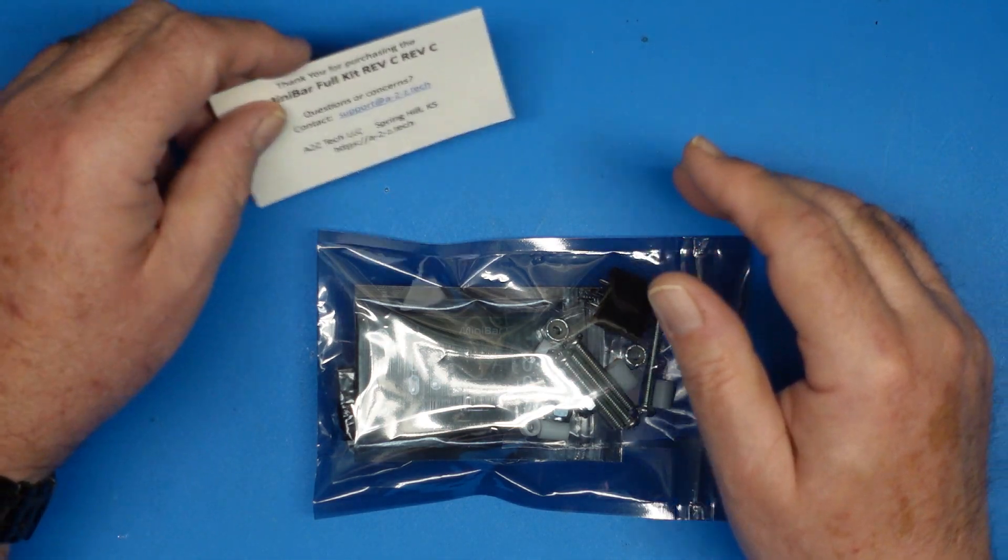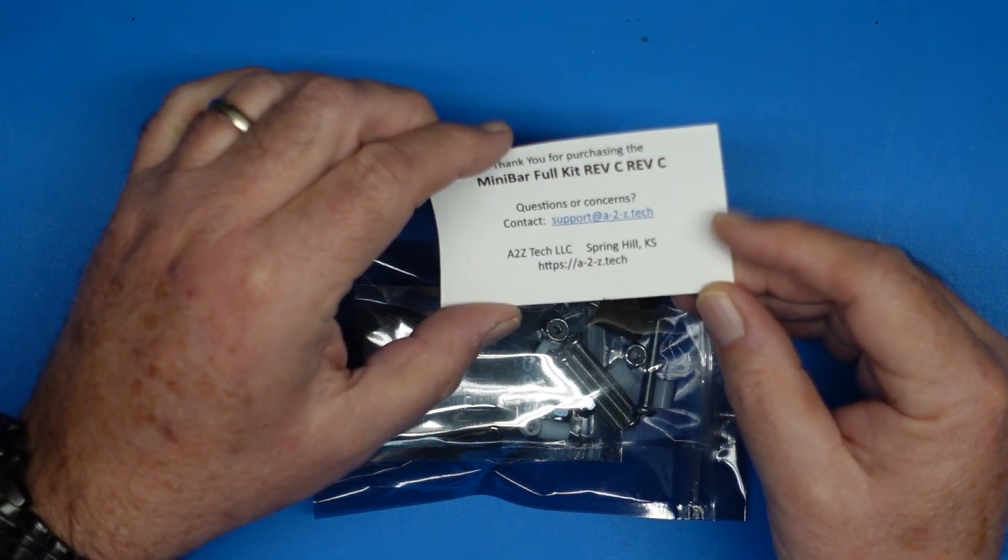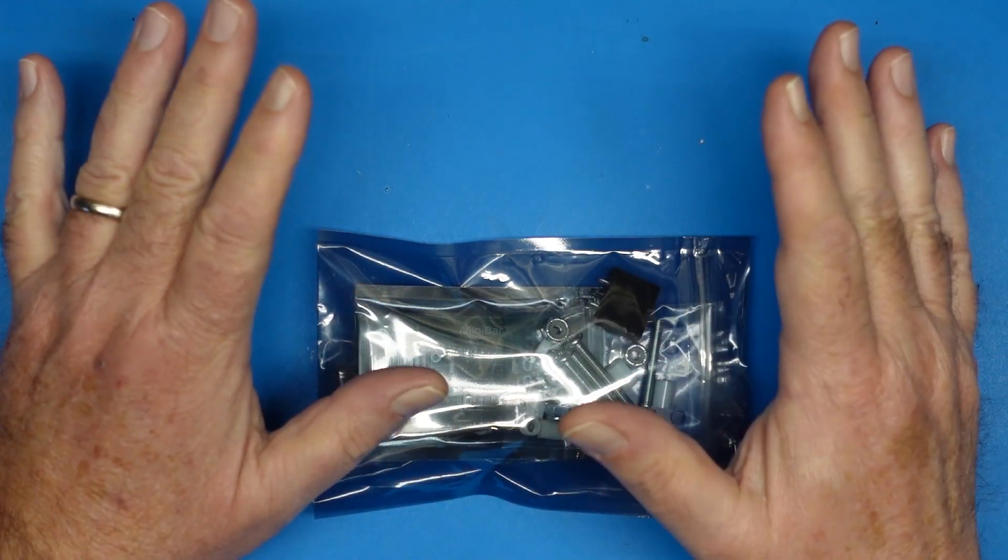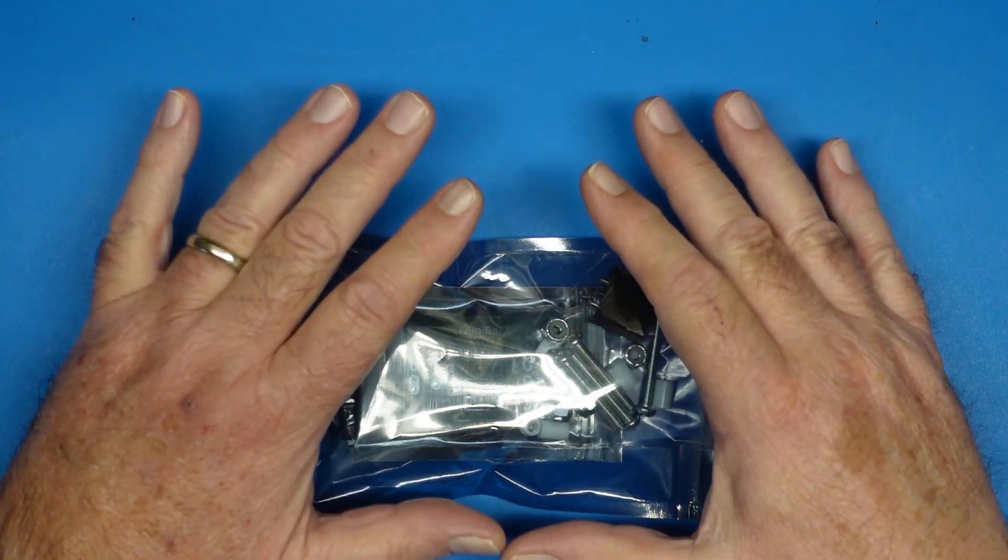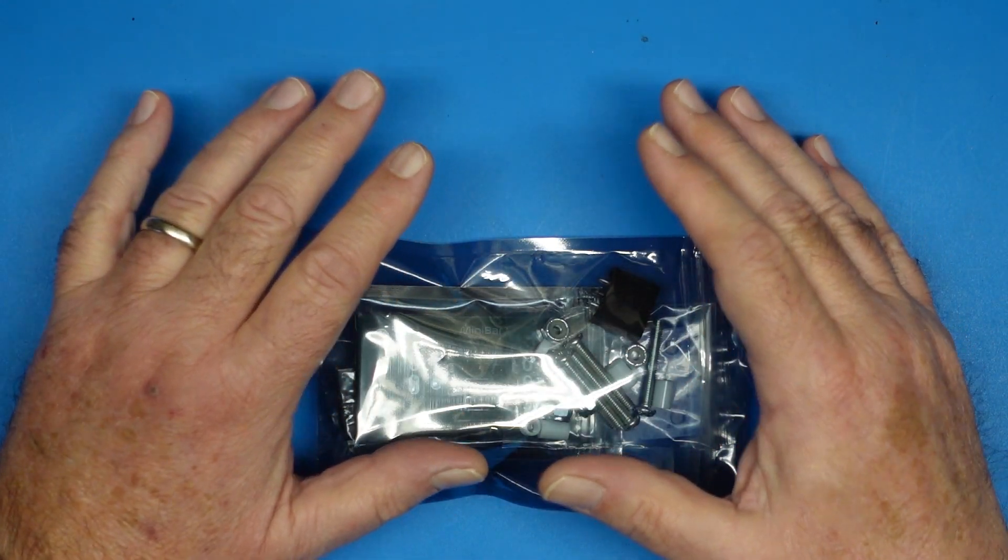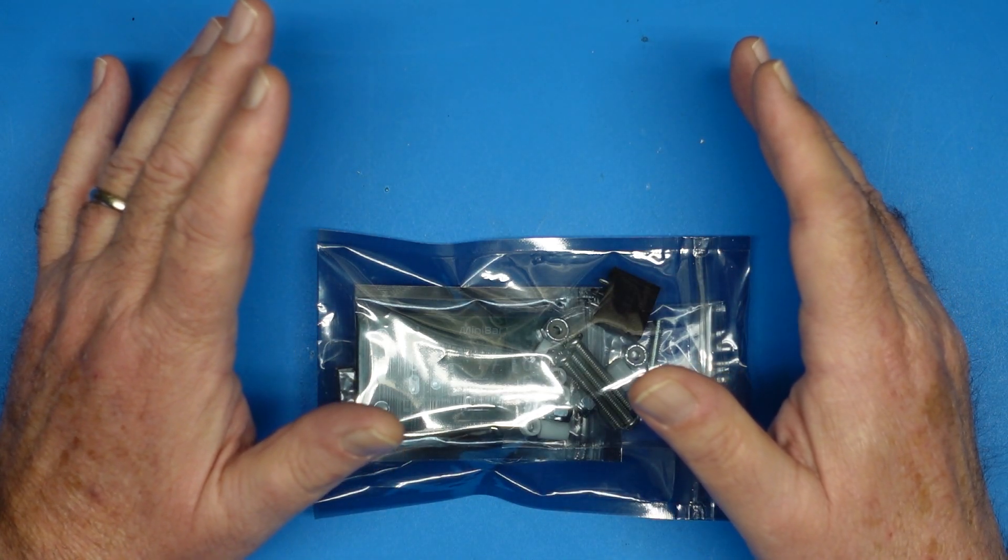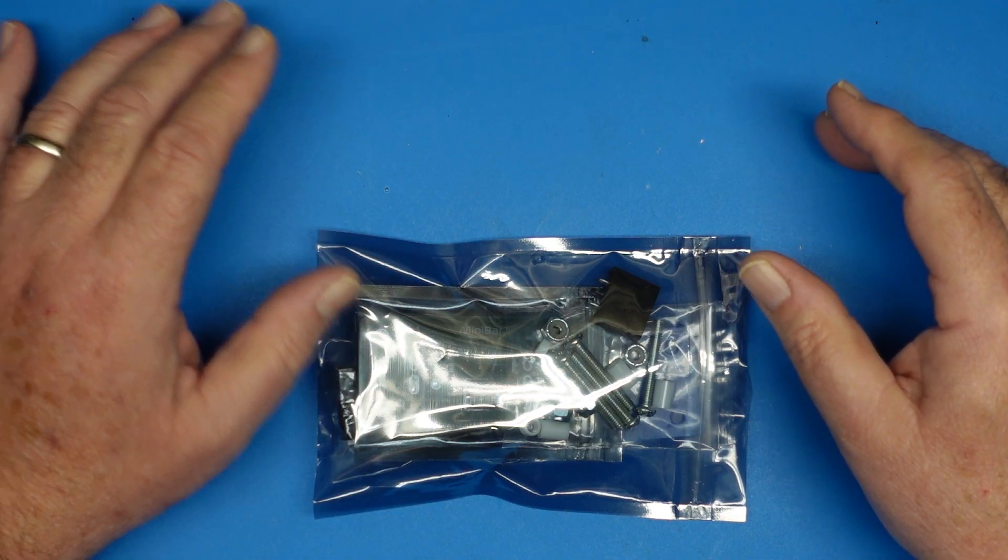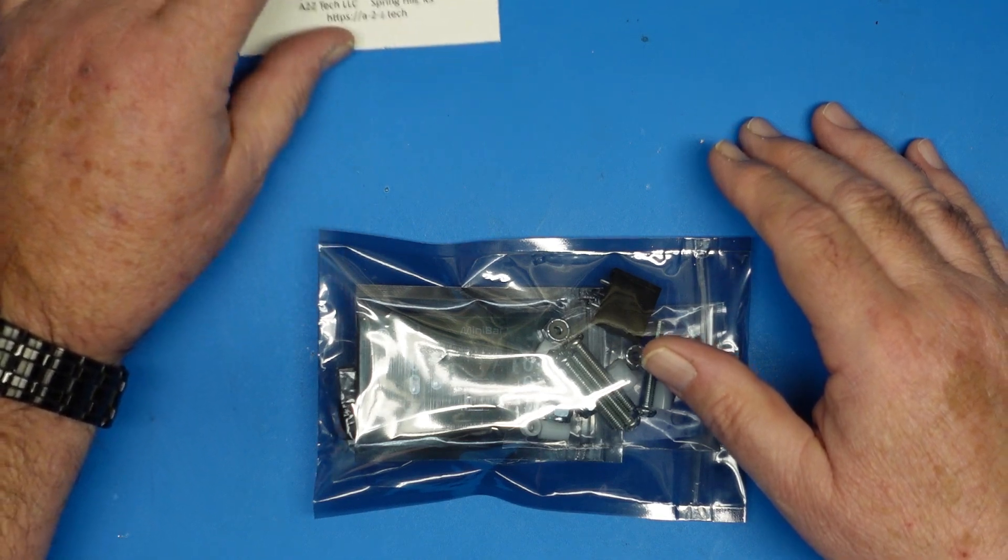Tom sells these on his website, a-2-z.tech. Tom lives in Kansas. We've had Tom on Coffee and Ham Radios before. Really knowledgeable guy, super nice guy. Highly recommend his gear. He did a great review on fuses, and you think fuses are kind of boring, but Tom showed that not all fuses are created equal. Today I want to take a look at what Tom calls the mini bar full kit, available on his website.